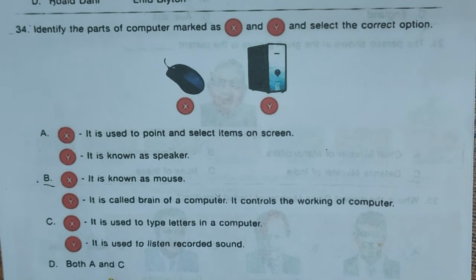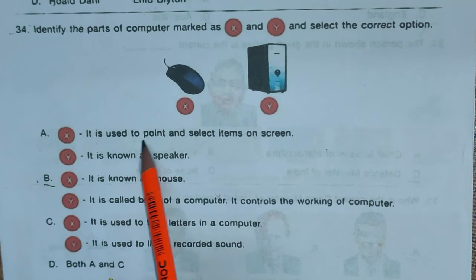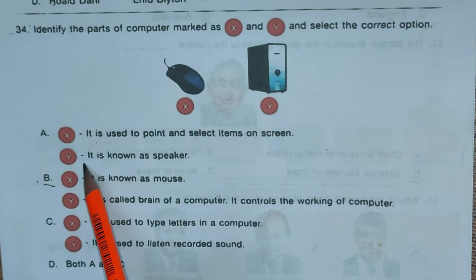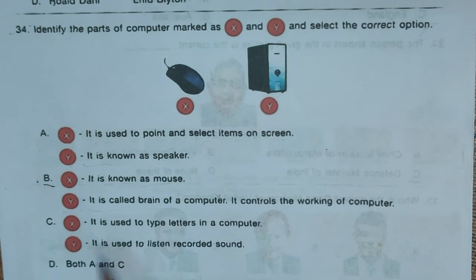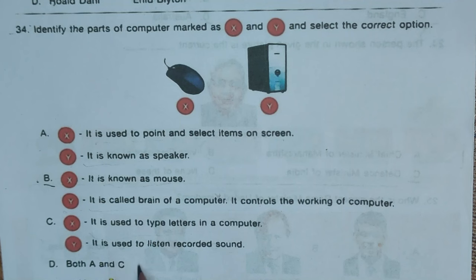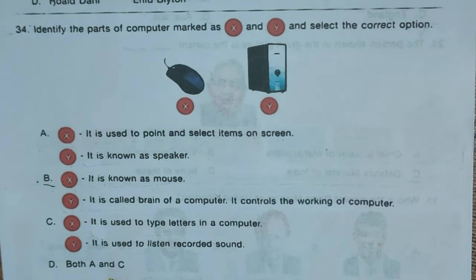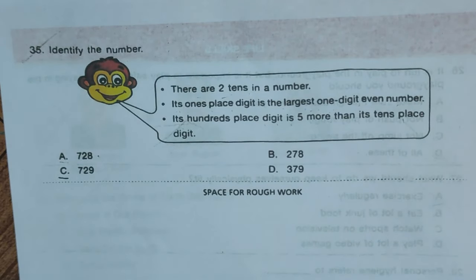Question 34: Identify the parts of the computer marked as X and Y and select the correct option. Options: A) X is used to point and select items on screen, B) X is mouse, Y is the brain of the computer which controls its working, C) X is used to type letters, Y is used to listen to recorded sound, D) both A and C. Correct answer is option B — X is the mouse and Y is the CPU, the brain of the computer that controls the entire system.